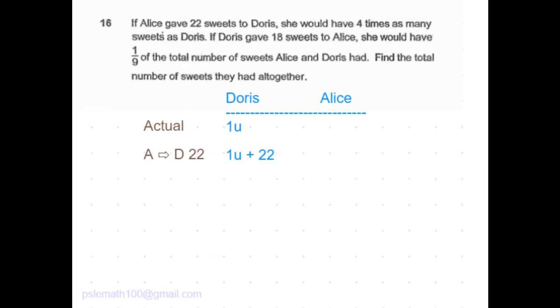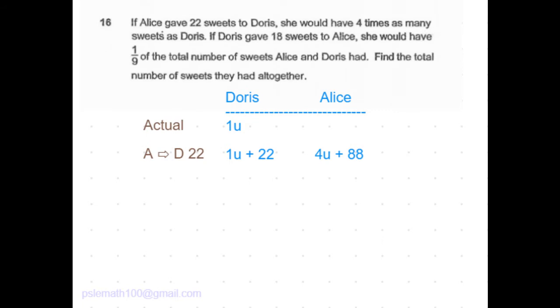If Alice gives Doris 22 sweets, Doris would have 1u plus 22. Now Alice has four times the number of sweets as Doris. Four times of 1u plus 22 is 4u plus 88.